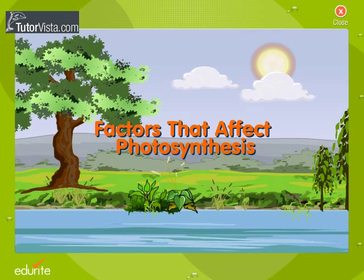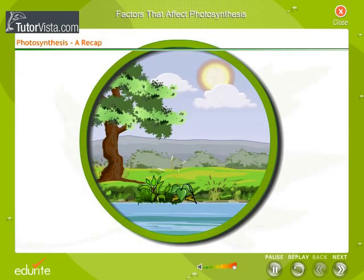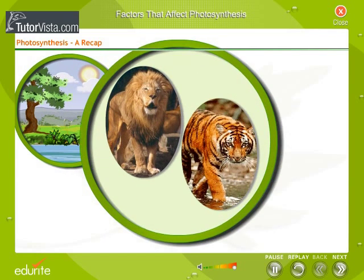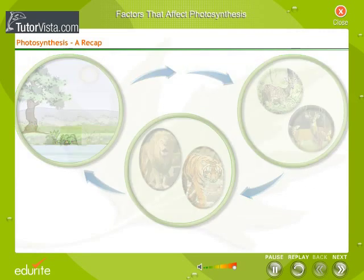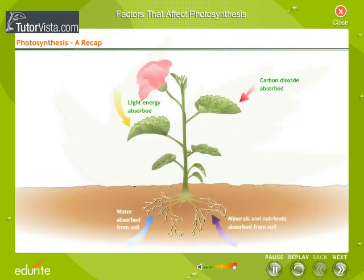Factors that affect photosynthesis. Plants are the food suppliers to the world. Even carnivorous animals like the lion and tiger, which do not eat plants, are indirectly dependent on them as they eat herbivorous animals which eat plants. Plants are called autotrophs as they make their own food. They convert sunlight, carbon dioxide, and water into glucose — their food.